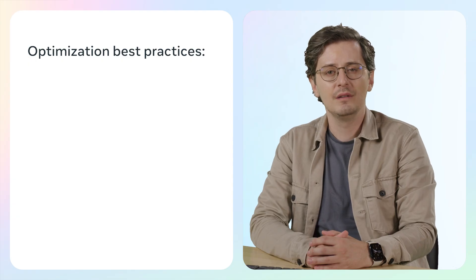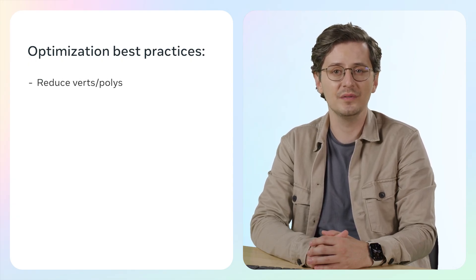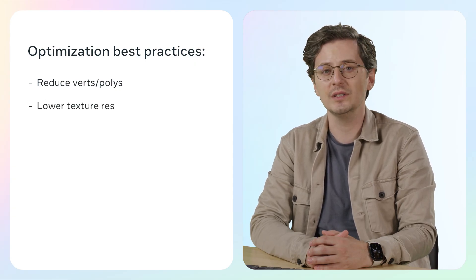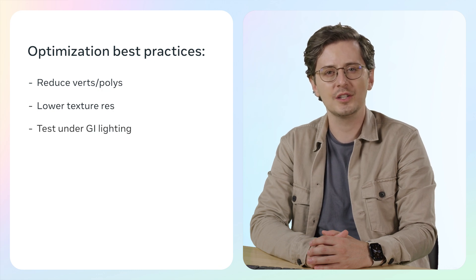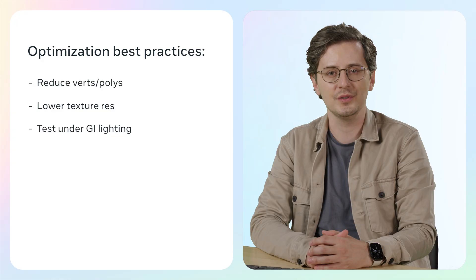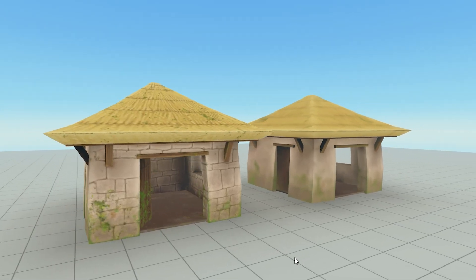To ensure the best performance and visual quality for your textured models in worlds, follow these optimization tips. First, reduce the number of vertices and polygons in your models without sacrificing visual fidelity. Next, use the smallest texture resolution that still provides the desired level of detail. Finally, test your models and worlds and adjust your textures and materials as needed to achieve the desired appearance under GI lighting. By optimizing your models and textures, you'll ensure that your worlds look great and run smoothly for all users. This will also improve the performance of the GI cache, which is responsible for light rendering in worlds.